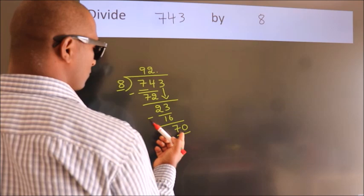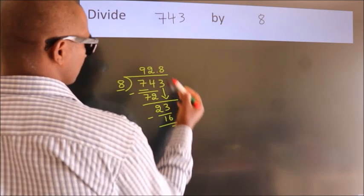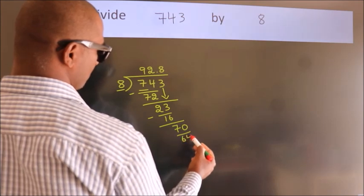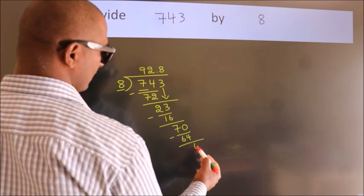A number close to 70 in the 8 table is 8 eights, 64. Now we subtract. We get 6.